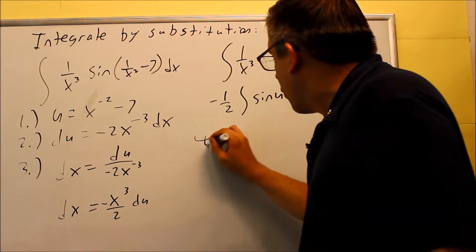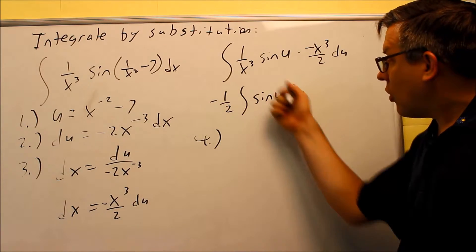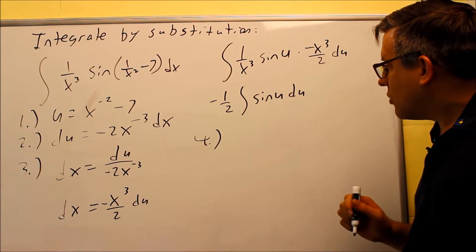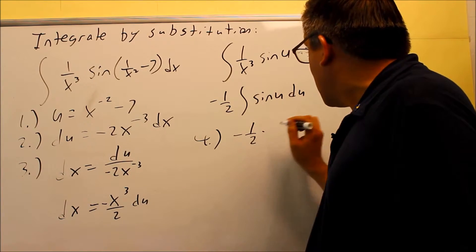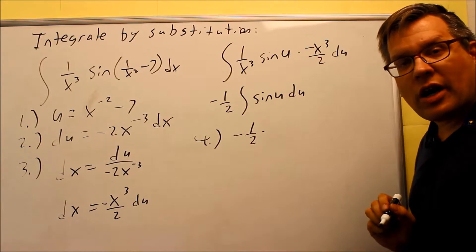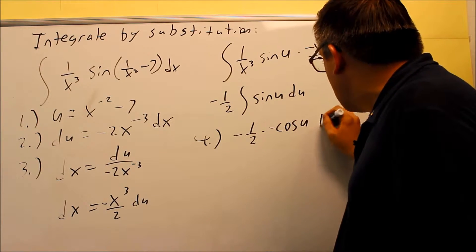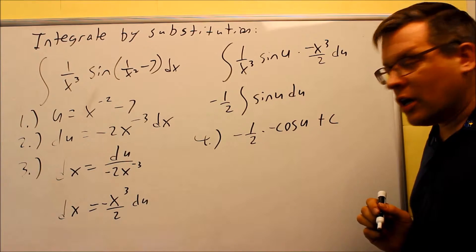Now, in step 4, now I have all the x's are canceled out, I'm ready to integrate. So I'll take the anti-derivative. Now I have negative 1 half, and then times when I integrate sine, I'm going to get negative cosine. Negative cosine of u, and don't forget the plus c in the end.